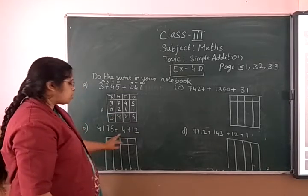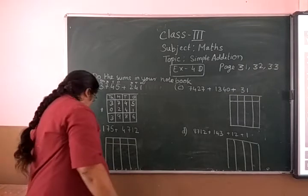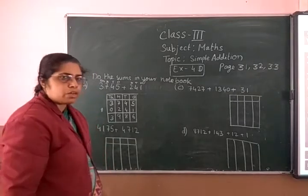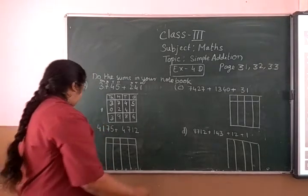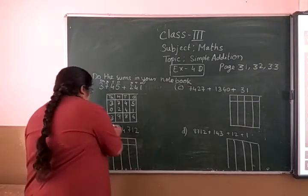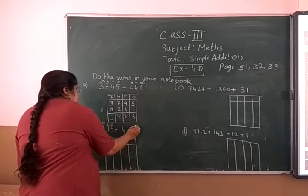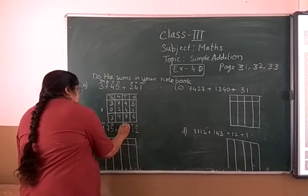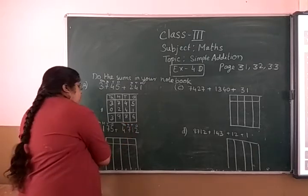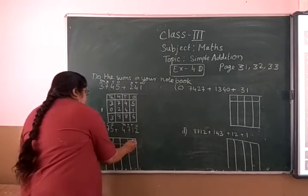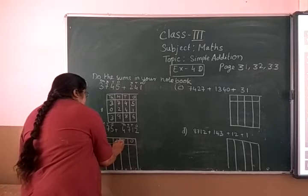Understood? Same way this question also you have to follow. Write on top: 1, 10, 100, 1,000. Right here — 1, 10, 100, 1,000. Here you see: 1, 10, 100, 1,000. And in this column also you have to write: 1, 10, 100, 1,000.